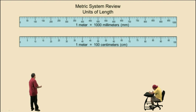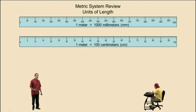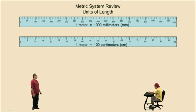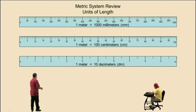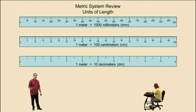One meter is also equivalent to 100 centimeters. Centi means one one-hundredth of, therefore there are 100 centimeters in one meter. One meter is also equal to 10 decimeters. Deci means one-tenth of, therefore there are 10 decimeters in one meter.